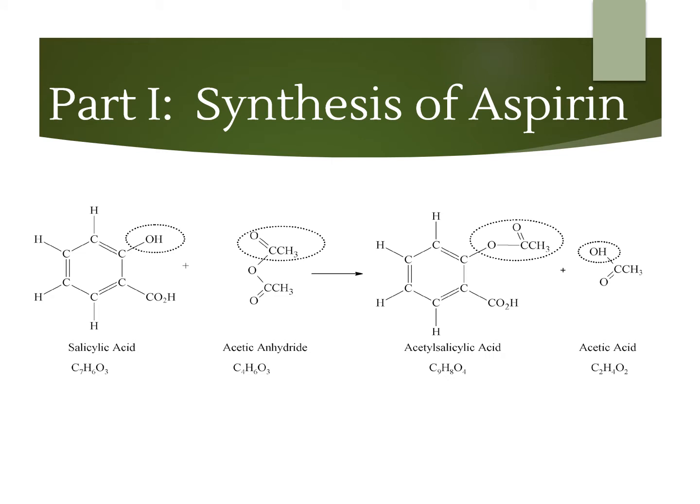For the synthesis of aspirin, you're going to combine salicylic acid with acetic anhydride. Basically what's going to happen is that the two functional groups that are circled here are going to switch with one another, and you'll form acetylsalicylic acid and acetic acid. Acetylsalicylic acid is the technical term for aspirin, and acetic acid is a side product.